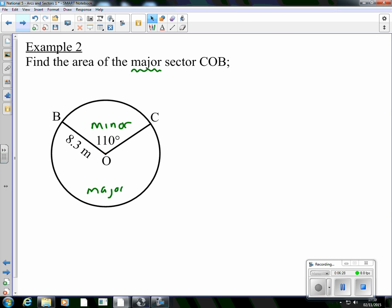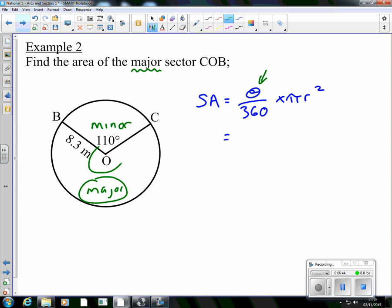So if I'm looking for the sector area here, again, it's a fraction, θ over 360, of the area of a circle, which is πr². Now, we have to be careful to make sure that angle is correct. If I'm looking for this major sector, the angle I want is there.